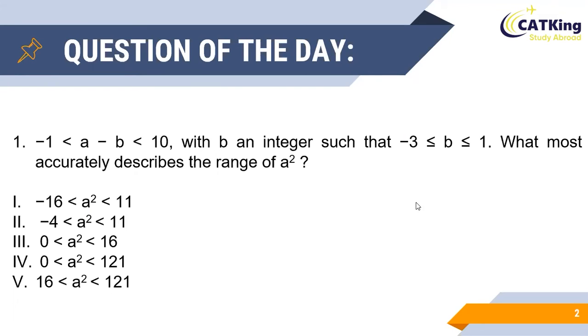In this question we are given that a minus b lies between minus 1 and 10, and it is also given that b is an integer which lies between minus 3 and 1, including both values. Now we are asked to find the range of a square.